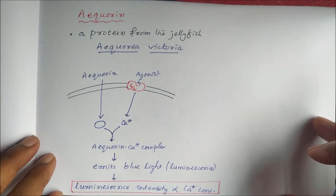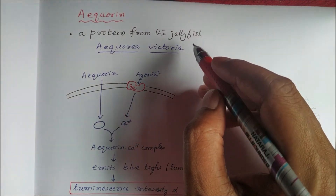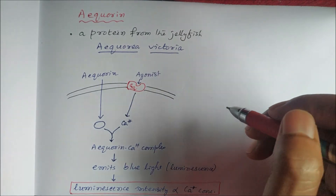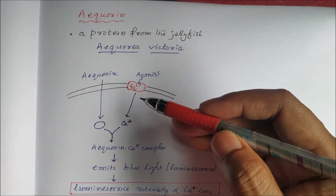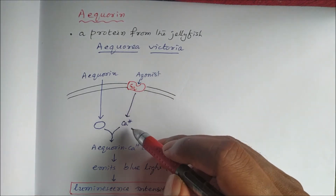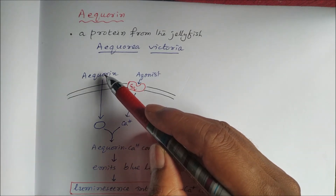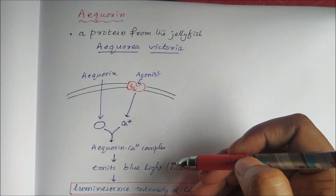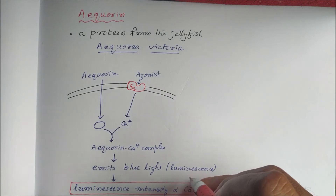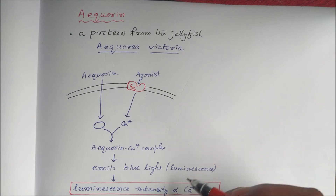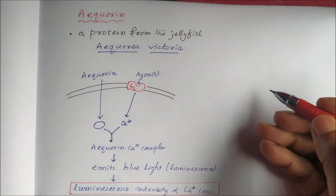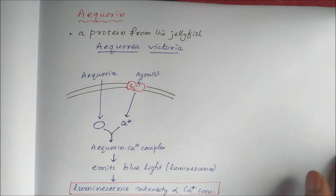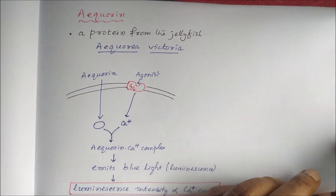Let us take one example from each. Aequorin is a protein isolated from the jellyfish Aequorea victoria. When the agonist binds to the specific receptor and increases intracellular calcium, aequorin enters the cell, binds to calcium, and forms a complex that emits blue light — a luminescence signal. The luminescence intensity is directly proportional to calcium concentration, allowing us to measure calcium influx.